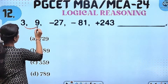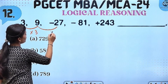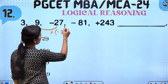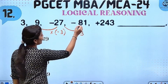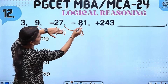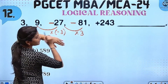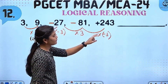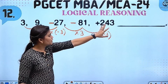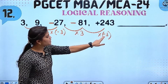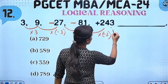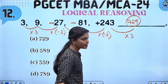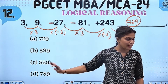So, ready? 3 times 3 is 9. 9 times 3 is 27. But there's a minus sign — rose in the minus. Again, 27 into 3 is 81. Again, minus sign. 81 into 3 — 243. Minus into minus gives plus. So, 243 into 3 is 729. Answer is 729. Option A is right.